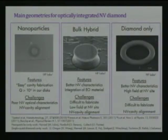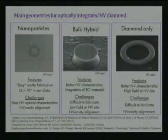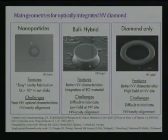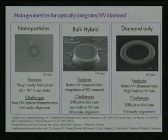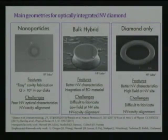We moved on to bulk diamond, using single crystal diamond. In one case we created a ring resonator out of gallium phosphide — so the emitter is inside the diamond and interacts with a field trapped in a micro cavity sitting on the surface of the diamond. This had the advantage of better NV characteristics because we're working with single crystal diamond, and the option of integrating the electro-optic properties of gallium phosphide, which is work I am continuing here at the University of Washington. It does have fabrication challenges and lower coupling since you're working with the evanescent field into the diamond.